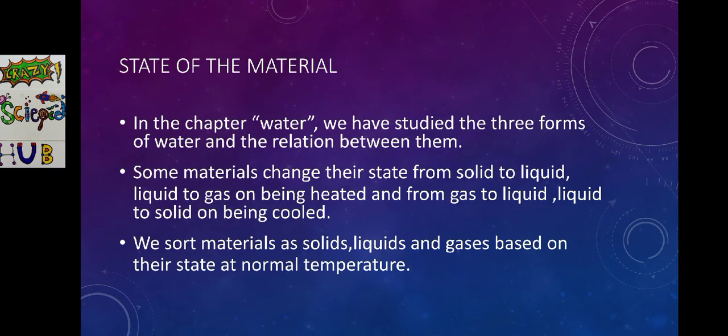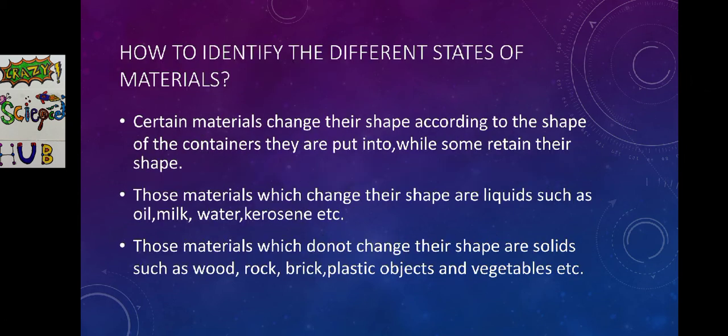Now we are going to discuss the different states of material. In the previous chapter on water, we have studied the three forms of water and the relation between them. Do you remember it? Some materials change their state from solid to liquid, liquid to gas on being heated and from gas to liquid, liquid to solid on being cooled. We sort materials as solids, liquids and gases based on their state at normal temperature.